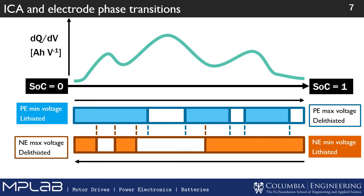From the peaks you can estimate the loss of lithium inventory or the loss of active material. All of this is due to degradation mechanisms, including solid electrolyte interface formation, electrode fracture, or realignment of the lattice structure. Each rectangle in this diagram represents a different part of the electrode's behavior as the state of charge goes from 0 to 1. As lithium ions lithiate and delithiate between the two electrodes, you can tell different things about their structure and degradation level — that's why ICA is so important.